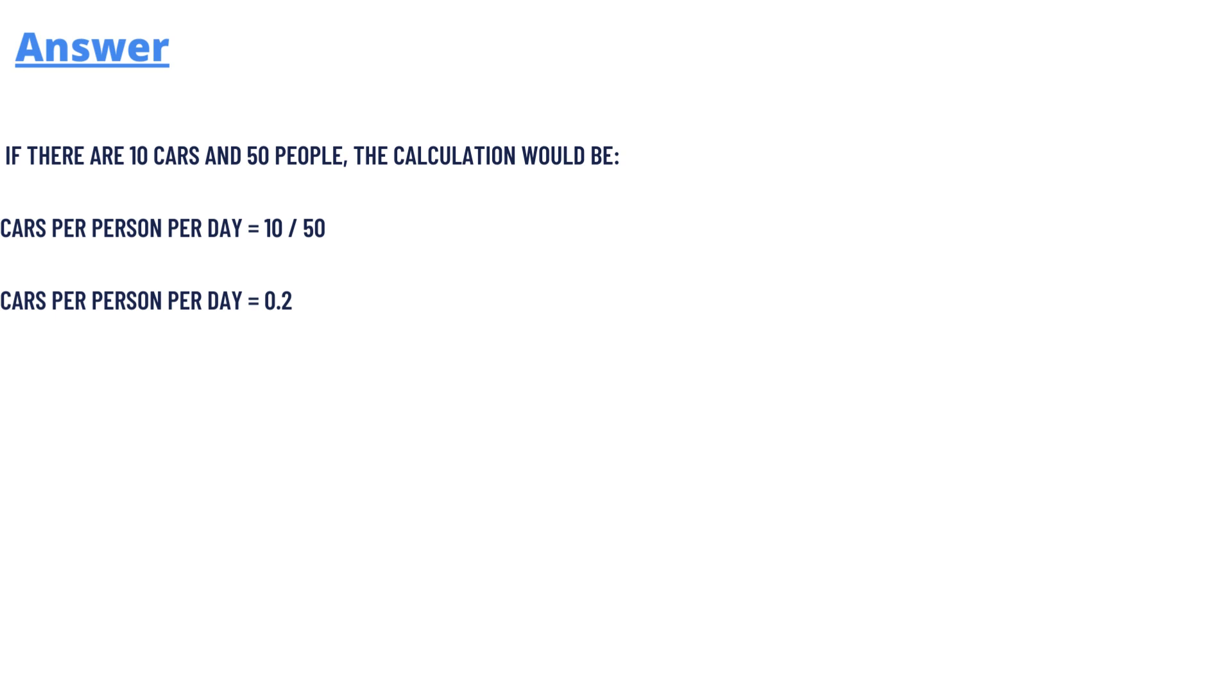For example, if there are 10 cars and 50 people, the calculation would be 10 divided by 50. Cars per person will be 0.2. That's the correct answer.